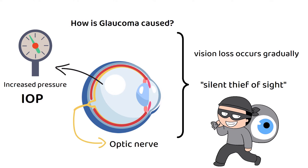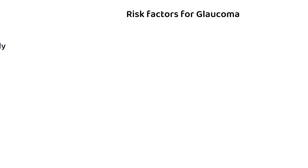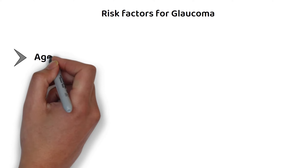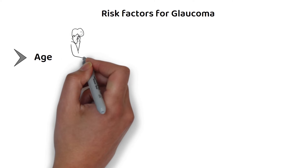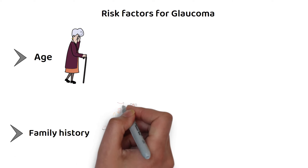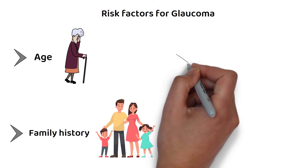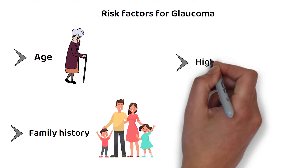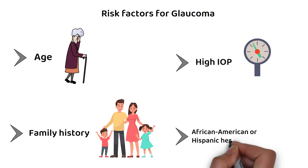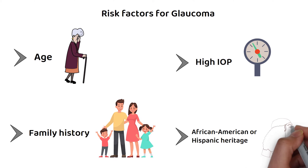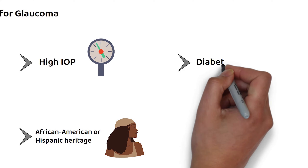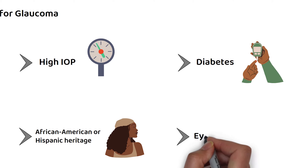Risk factors for glaucoma include age, especially over the age of 60, family history, high IOP, African American or Hispanic heritage, diabetes, and previous eye injury.